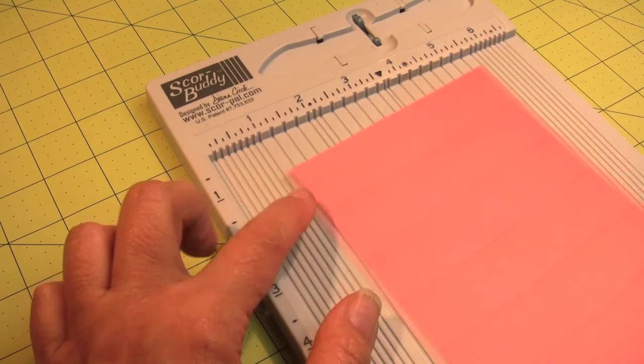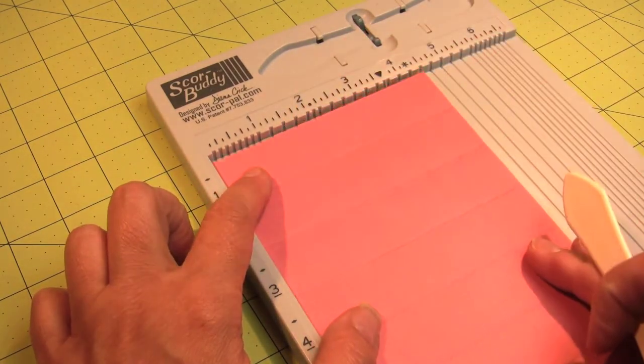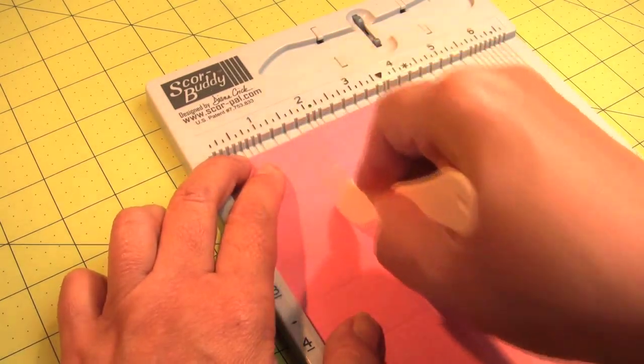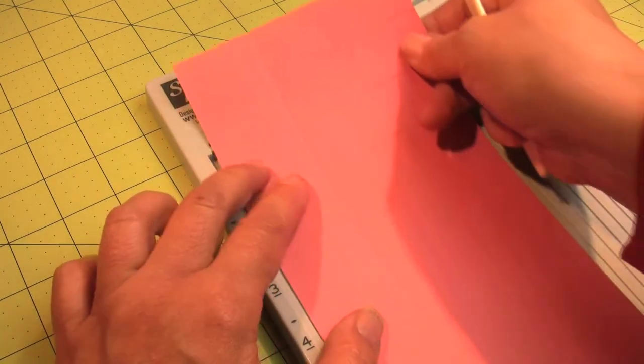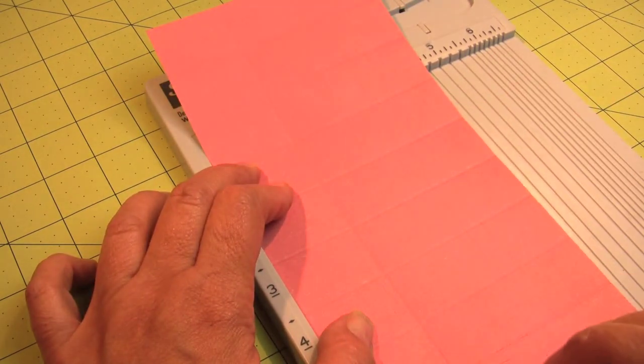So I'm adapting my scoring because I'm using the score buddy instead of the score pal. I need to do an inch and a half all the way down, so I'm just going to do it halfway down, slide it up since my score buddy doesn't go all the way down the 9 inches, and then complete the score.